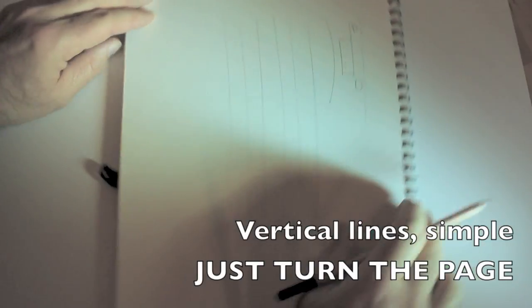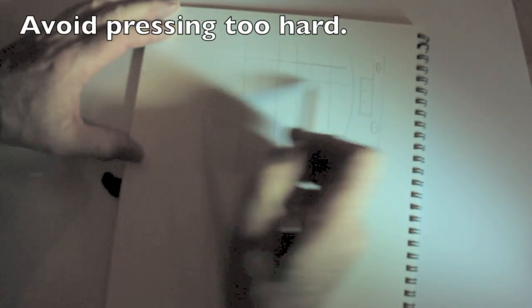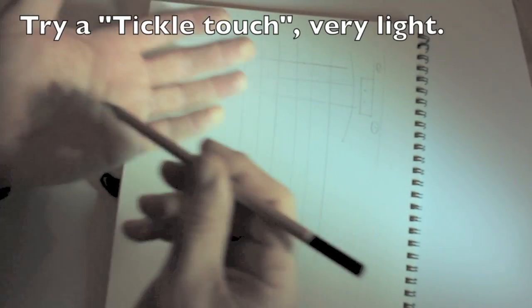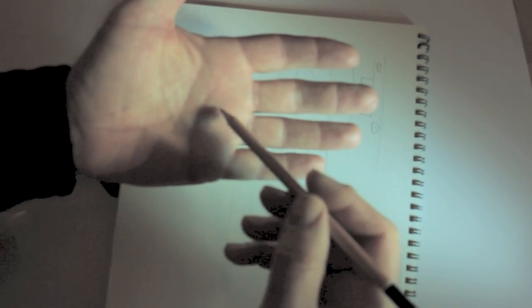But to cheat, and we'll call them cheats - you can call them techniques if you want - for vertical lines, do exactly the same thing, simply turn the page through 90 degrees. The pressure we apply can be light. This little tickle test on the palm of your own hand will give you an idea how lightly we can press the pencil on the paper.